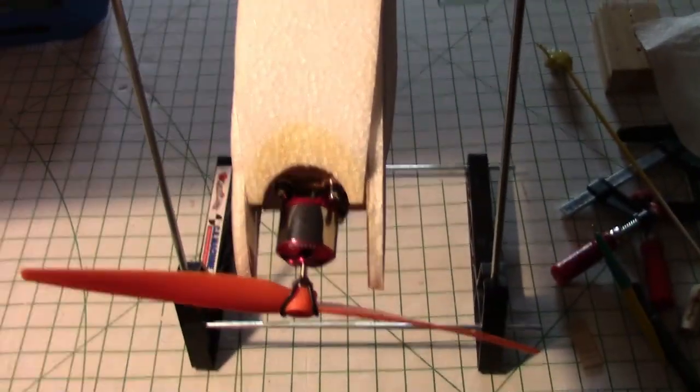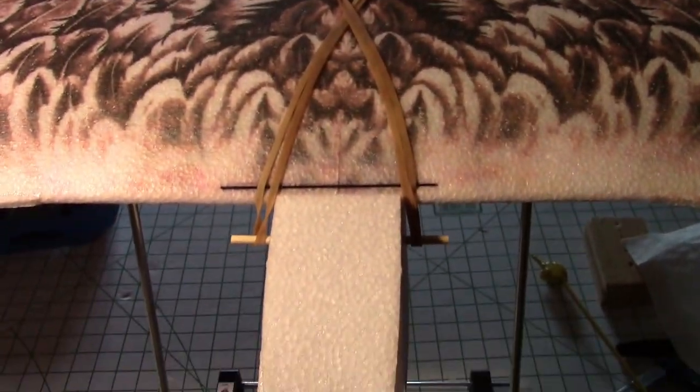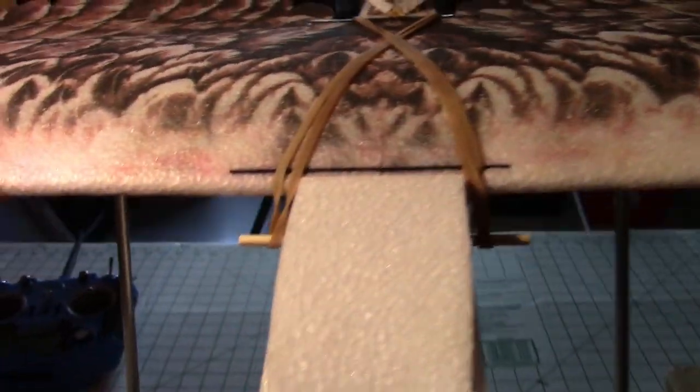Trying to figure out the CG. The manual says about 60mm from the leading edge of the wing and if you look under here you'll see the CG stand is right in front of that front wing spar which is about 60mm.